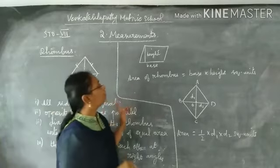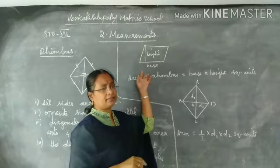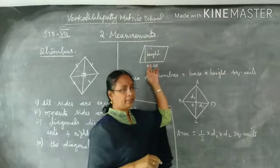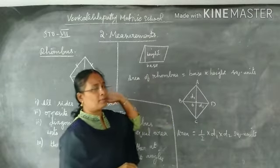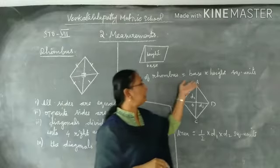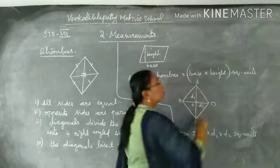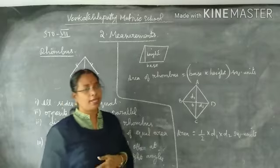These are two formulas we have. The first formula is side. Base into height. Base into height. Area of rhombus.